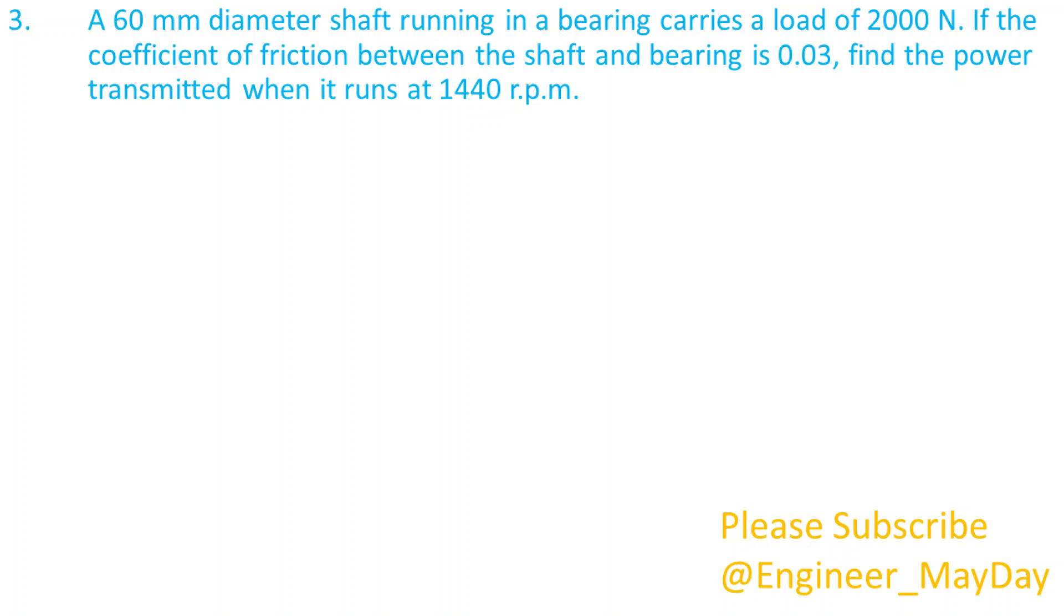Here is a third question. A 60mm diameter shaft running in a bearing carries a load of 2000 newtons. If the coefficient of friction between the shaft and bearing is 0.03, find the power transmitted when it runs at 1440 rpm.